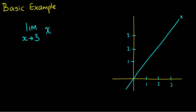Whatever we put in, it brings back out. So what's the limit as x approaches 3? Let's pick a point x on our axis — that corresponds to some f of x on our curve. As x gets closer and closer to 3, f of x moves closer and closer to the limit f of 3, which happens to be 3 as well. Similarly, from the other side, as x moves closer to 3, the curve also moves closer to our limit. We can check this graphically or numerically.